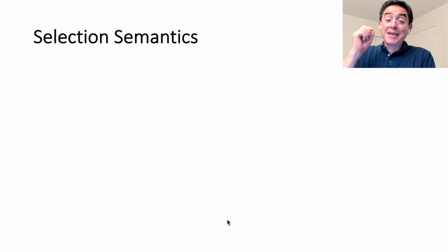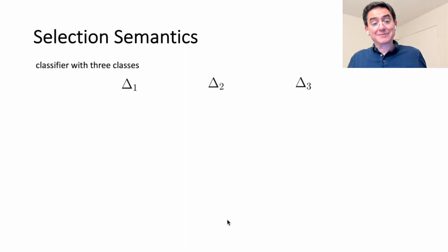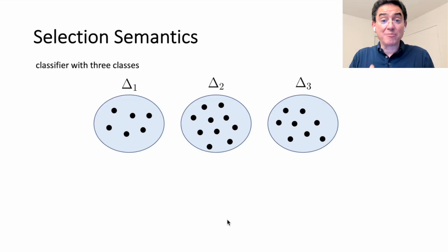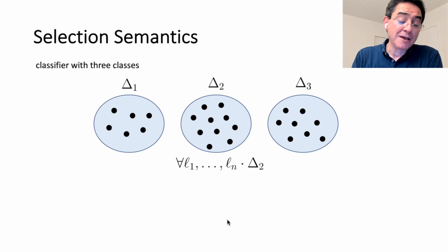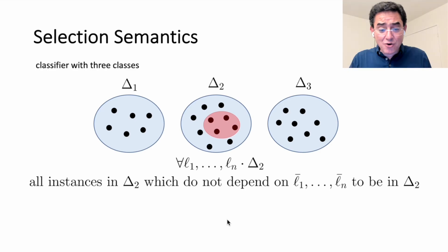One last word on selection semantics. This is very important. Suppose you have a classifier with three classes, and these classes are captured by these formulas. Each one of these formulas captures an oval instances. You go ahead and write an expression like this. You're universally quantifying literals from the second class formula. What does that mean? What we have shown is the main theorem in this work is that this formula is selecting a subset of the class instances. The question is, what instances are being selected?